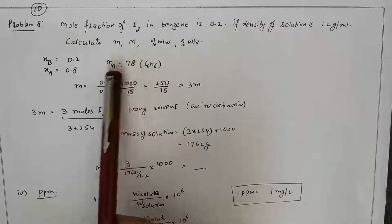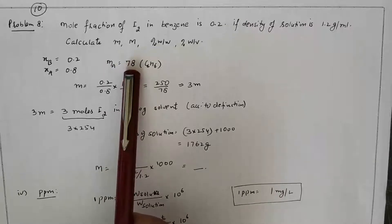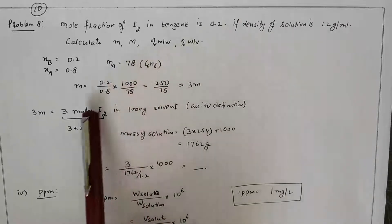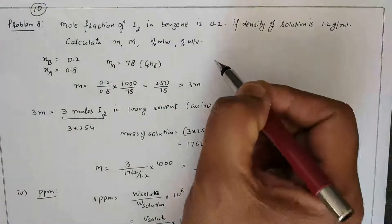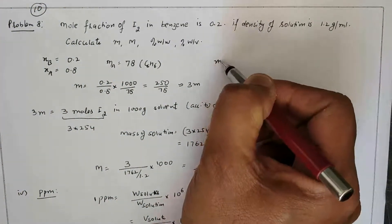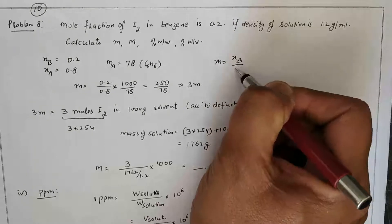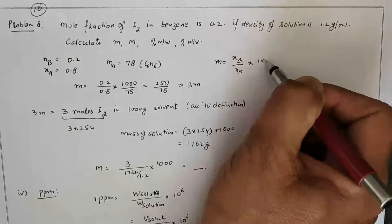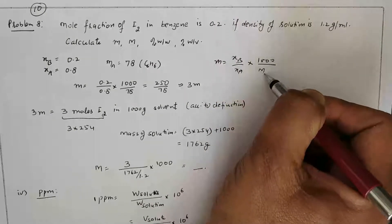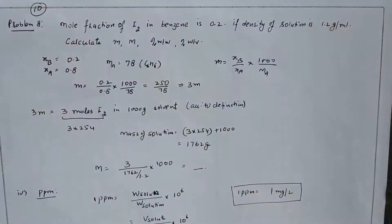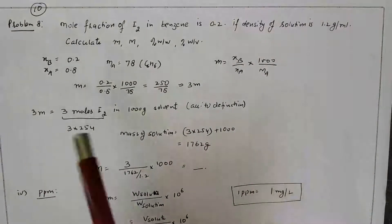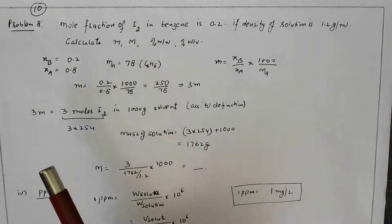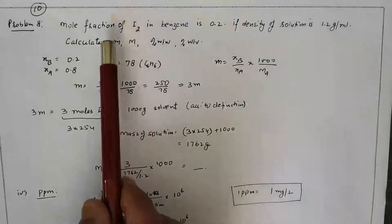Molar mass of solvent benzene (C6H6) is 78. Using the direct formula: molality = (x_B × 1000) / (x_A × M_A), where x_B = 0.2, x_A = 0.8, and M_A = 78. This gives molality approximately equal to 3 mol/kg.